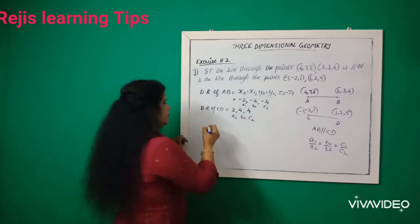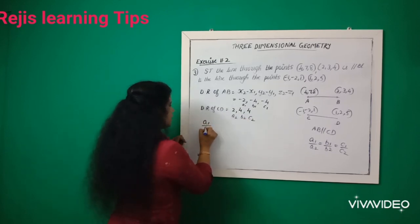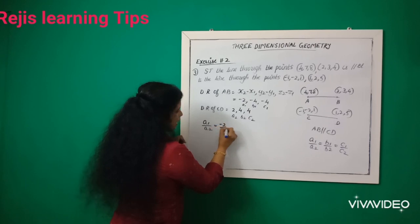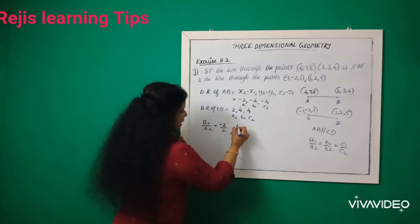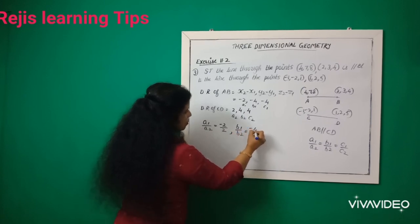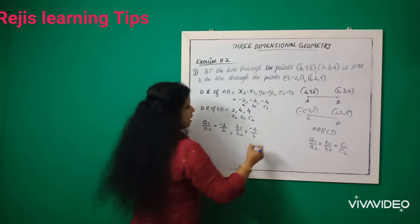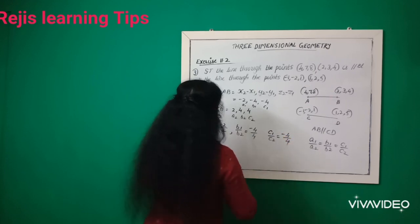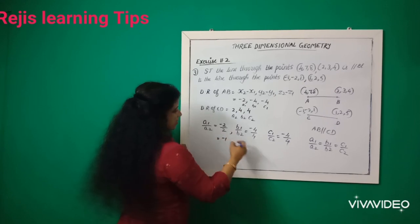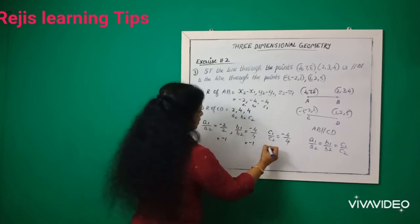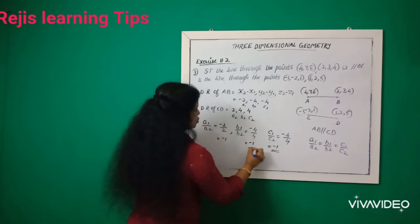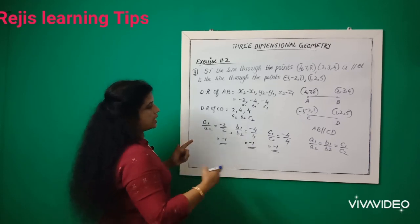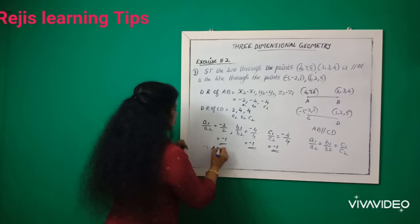Now a1/a2 means -2/2, b1/b2 means -4/4, and c1/c2 equals -4/4. So a1/a2 equals -1, b1/b2 also equals -1, and c1/c2 also equals -1. Therefore, a1/a2 = b1/b2 = c1/c2. Therefore AB is parallel to CD.